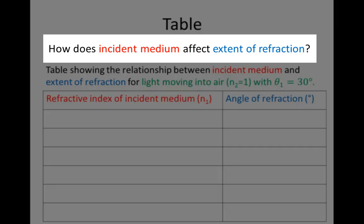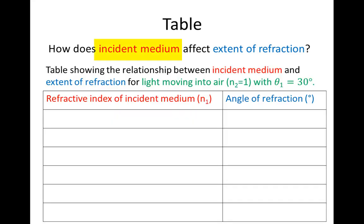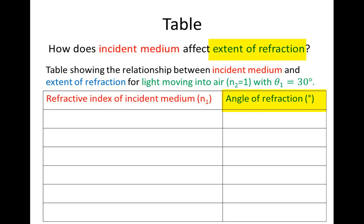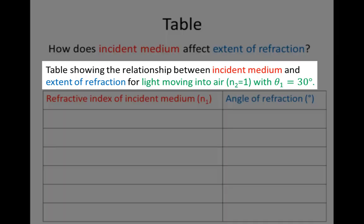So although our question is how does incident medium affect extent of refraction, in our table we don't put incident medium and extent of refraction because those would be qualitative measures and we want quantitative ones. We put the indicators of each — refractive index of incident medium and angle of refraction. The heading contains the variables themselves: table showing the relationship between incident medium and extent of refraction.